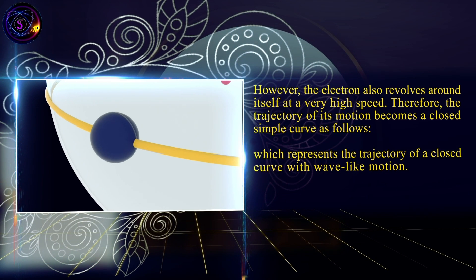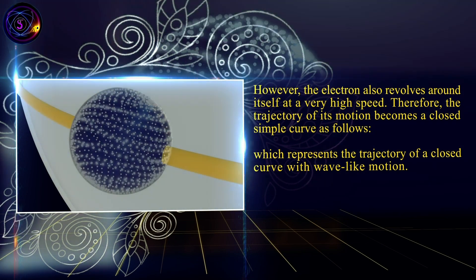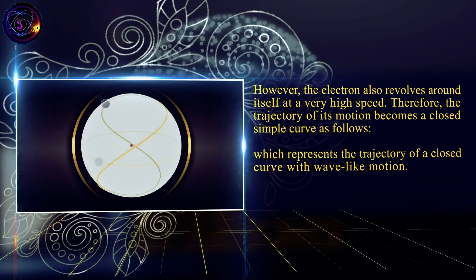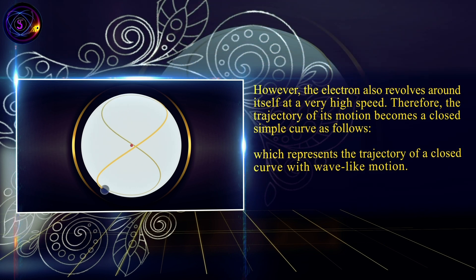However, the electron also revolves around itself at a very high speed. Therefore, the trajectory of its motion becomes a closed simple curve, which represents the trajectory of a closed curve with wave-like motion.